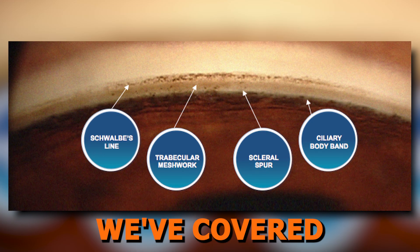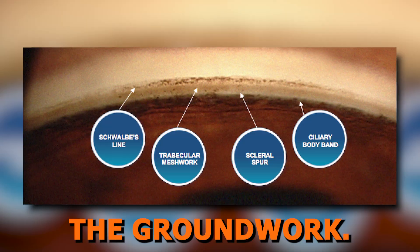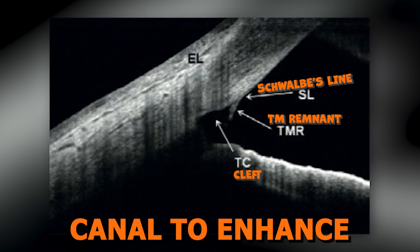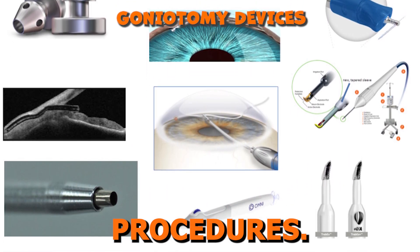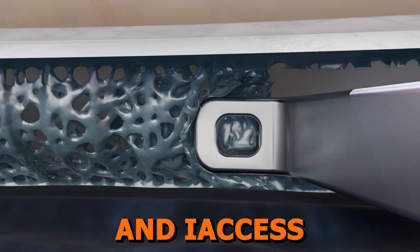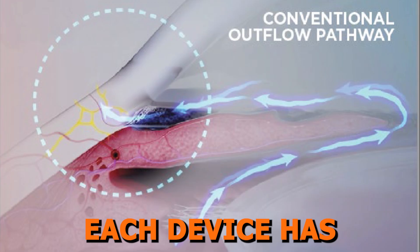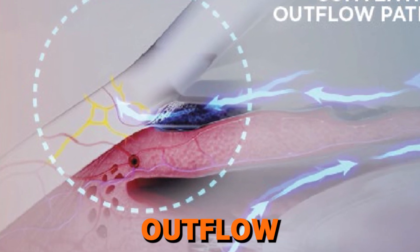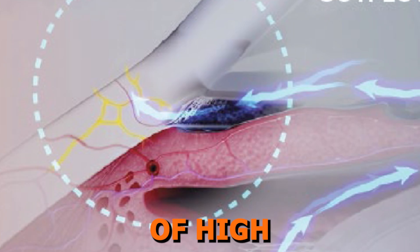Let's recap what we've covered today. We dove into the world of goniotomy and trabeculotomy, starting with a quick review of angle anatomy. We explored how these procedures work by removing or unroofing the trabecular meshwork and the inner wall of Schlemm's canal to enhance aqueous outflow. We walked through the different devices: for goniotomy procedures, we discussed the Trabectome, the Trabex, Trabex Pro, KDB Glide, Scion, Streamline, and i-Axis. For the trabeculotomies, we discussed GATT and the Omni surgical system. Each device has its unique features, indications, and contraindications, but they all share the common goal of improving outflow and reducing intraocular pressure in patients with adult and pediatric glaucomas by unroofing the trabecular meshwork, which is an area of high resistance.